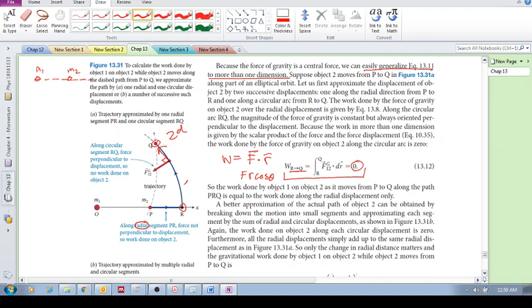So the work done by object one on object two, as it moves from P all the way from P to Q, along the path PRQ is equal to the work done along the radial displacement only. Work is only done along this direction. Because why? Because in this direction, you've got this cos of zero, so then you would have this work that's done.